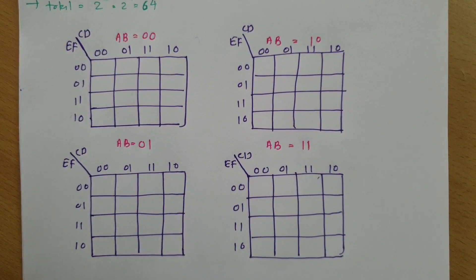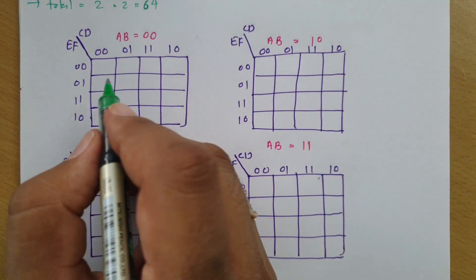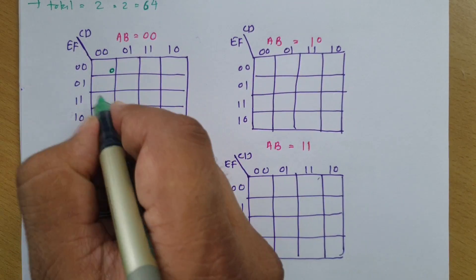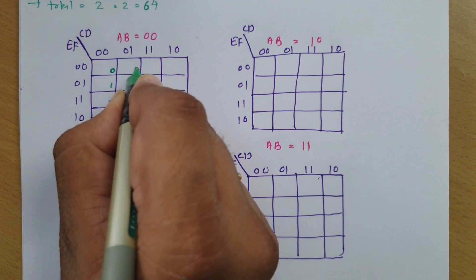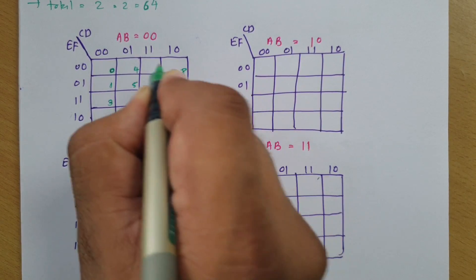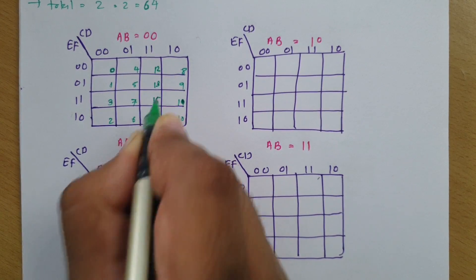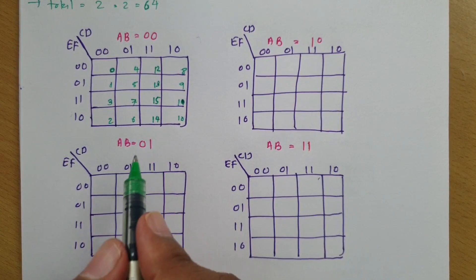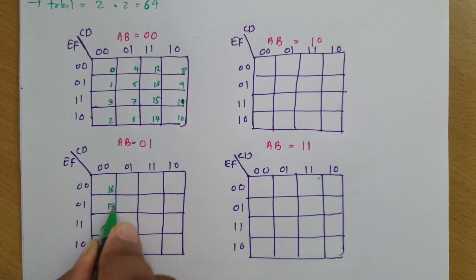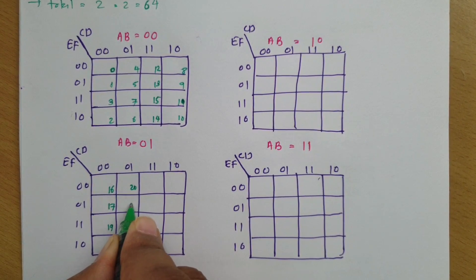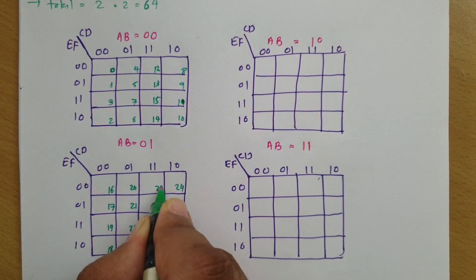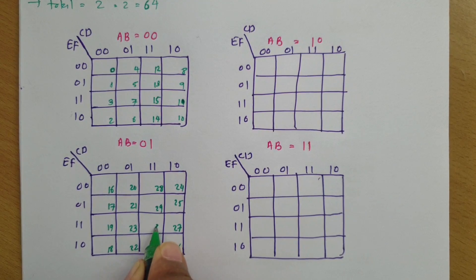Now, to identify the cell locations: when AB is 00 and CDEF is 00, we start from cell 0, then 1, 2, 3, 4, 5, 6, 7, 8, 9, 10, 11, 12, 13, 14, and 15. After that, AB is 01, so the next 16 cells start from 16, going through 17, 18, 19, 20, 21, 22, 23, 24, 25, 26, 27, 28, 29, 30, and 31.